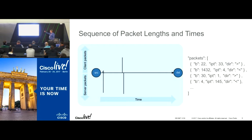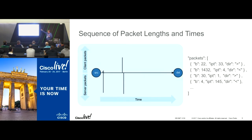On the right-hand side, you can see what looks like JSON output. This is actual output from the Joy utility — Joy puts everything out in JSON format so you can consume it in various tools. What we're seeing here is the byte count, the inter-packet time, and then the direction — which way that particular packet went. This is specific to the sequence, classified under packets, with each packet and the direction it was going.